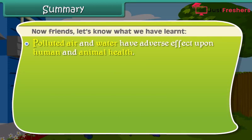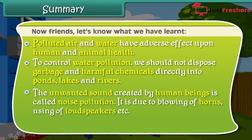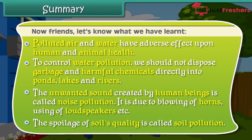Polluted air and water have adverse effects upon human and animal health. To control water pollution, we should not dispose of garbage and harmful chemicals directly into ponds, lakes, and rivers. The unwanted sound created by human beings is called noise pollution, caused by blowing of horns, use of loudspeakers, etc. The spoilage of soil quality is called soil pollution.